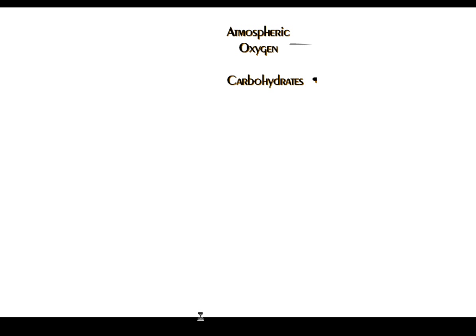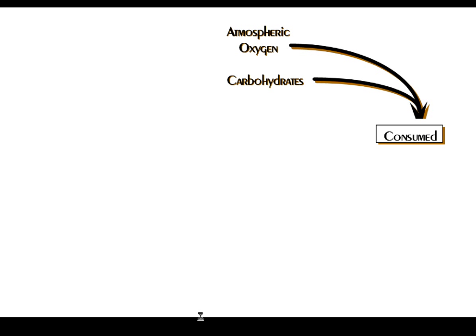If we want to examine something that seems to be cyclic, we have to start somewhere on a circle. Let's start at the top — it's a bit arbitrary. Let's consider that there's going to be oxygen in the atmosphere.